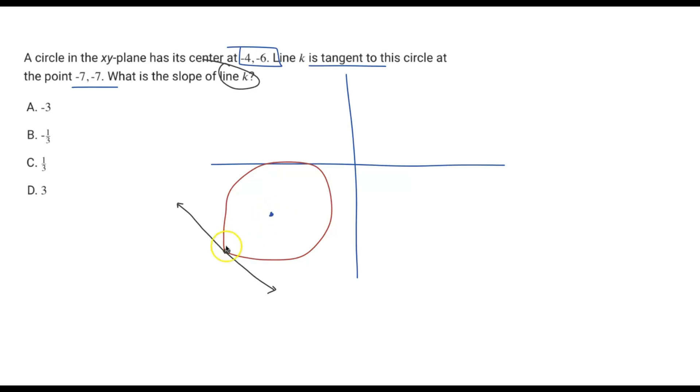We know two coordinate points, and of these two coordinate points, only one of them is actually on line k. What we need to do here is actually find the slope of the perpendicular line to line k.